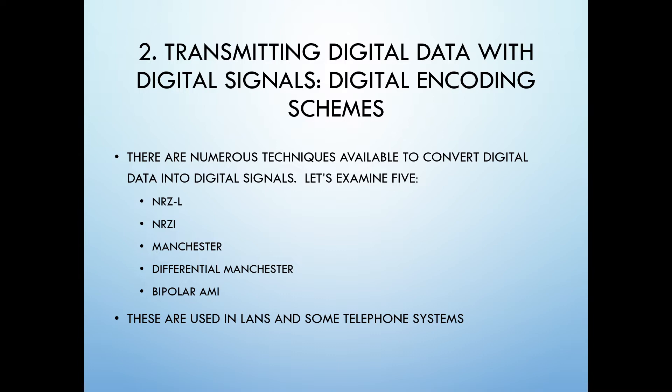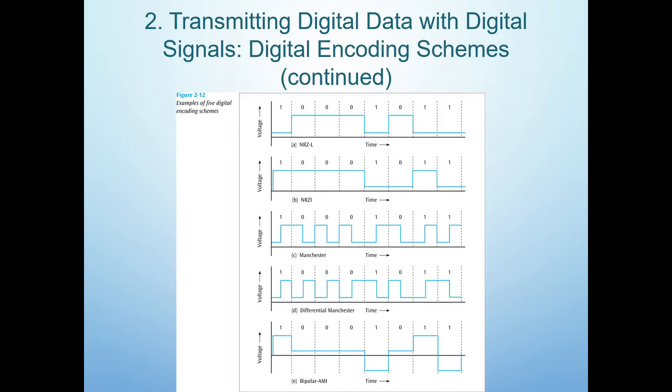The most common types of encoding are NRZL, NRZI, Manchester, Differential Manchester, and Bipolar AMI. These methods, especially Manchester, are mostly used in LANs and telephone systems. This picture shows these five types of encoding.